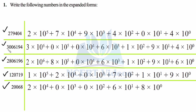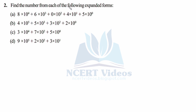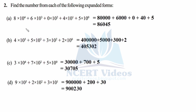Question 2: Find the number from each of the following expanded forms. In this question we will reverse our pattern — we are given the expanded form and we have to form the number. This makes it more clear how expanded form can be converted to a number. First: 8 into 10 raised to power 4. You solve the terms individually and put plus signs. So 8 into 10 raised to power 4 will be 8 followed by 4 zeros.